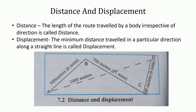Ranjit could also have travelled to school directly from A to D in a straight line. AD is the minimum distance along a straight line from Ranjit's house to the school. The minimum distance traversed by a moving body in one direction from the original point to the final point is called displacement. In displacement, both distance and direction are taken into account. Therefore, displacement is a vector quantity. The unit of measurement of distance and displacement is the meter in both the SI and MKS systems.